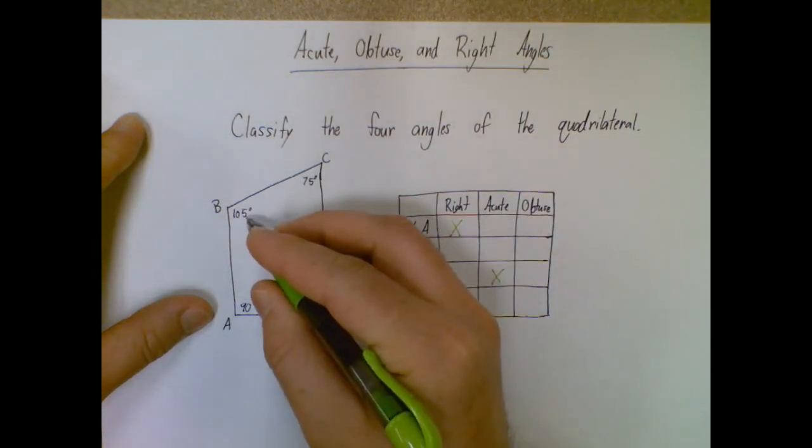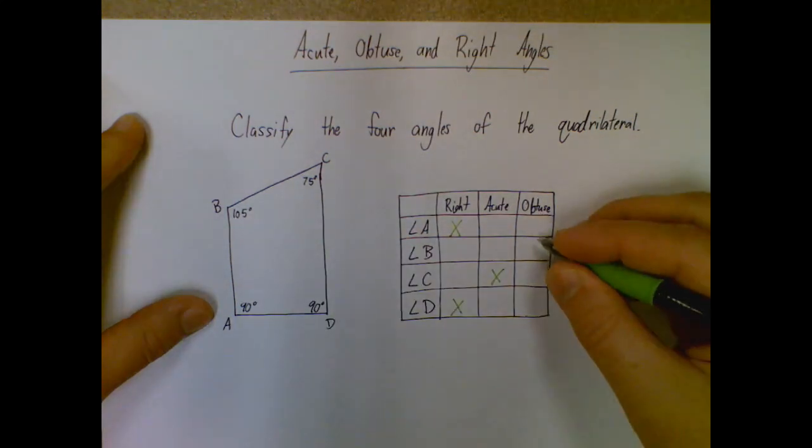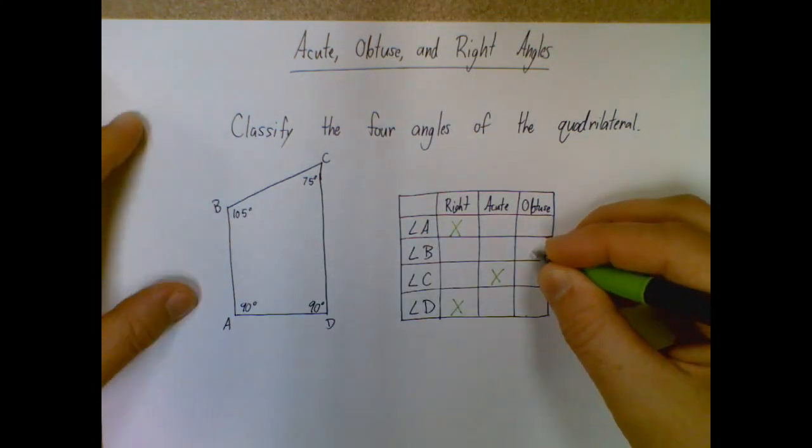And this one is 105, which is larger than 90. So that angle B there is obtuse.